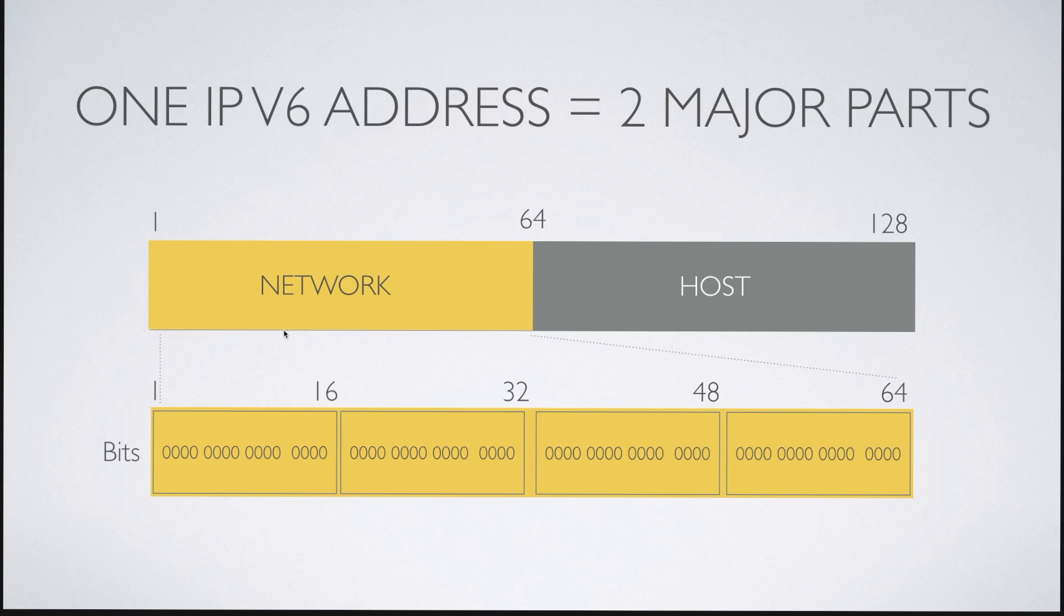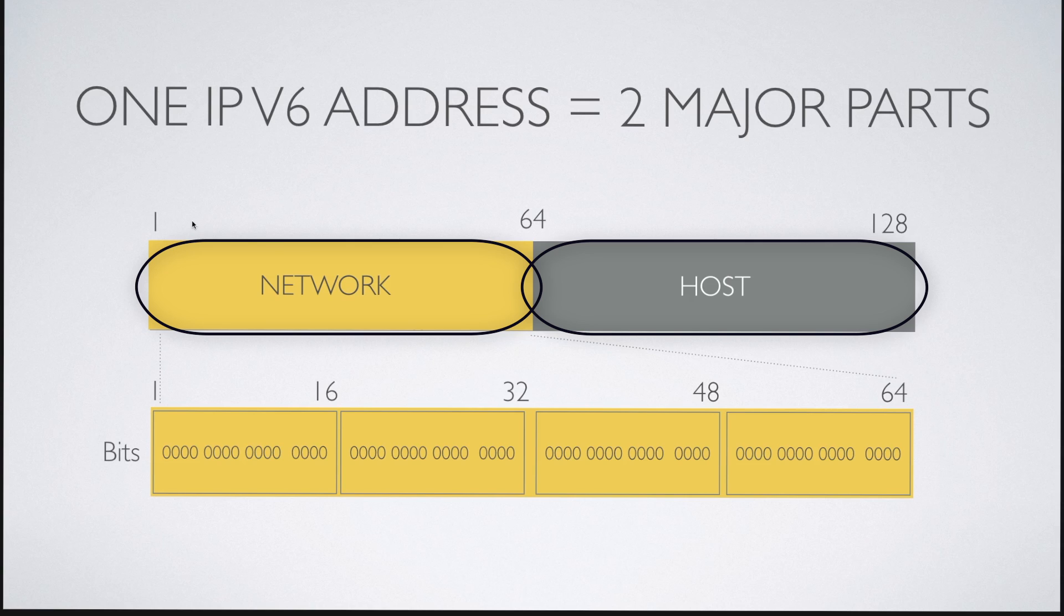One IPv6 address has actually two major parts, a network part and a host part. Each part consists of 64 bits. That is valid for both the network and the host.